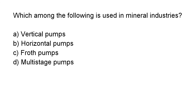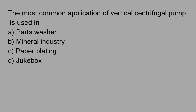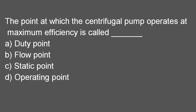Next question: Which among the following is used in the mineral industry? Froth pump is used. Option C is right. Next question: Vertical pump uses throttle bush. Option B is right. Next question: The most common application of a vertical centrifugal pump is in a parts washer. Option A is right. Next question: The point at which the centrifugal pump operates at maximum efficiency is called the duty point. Option A is right.